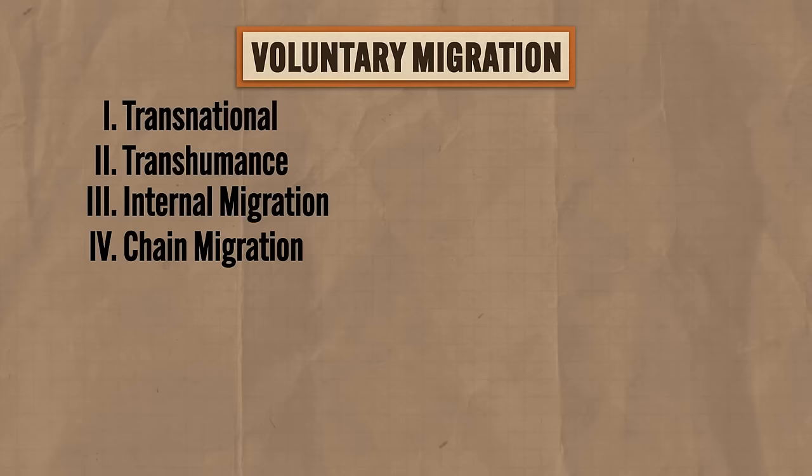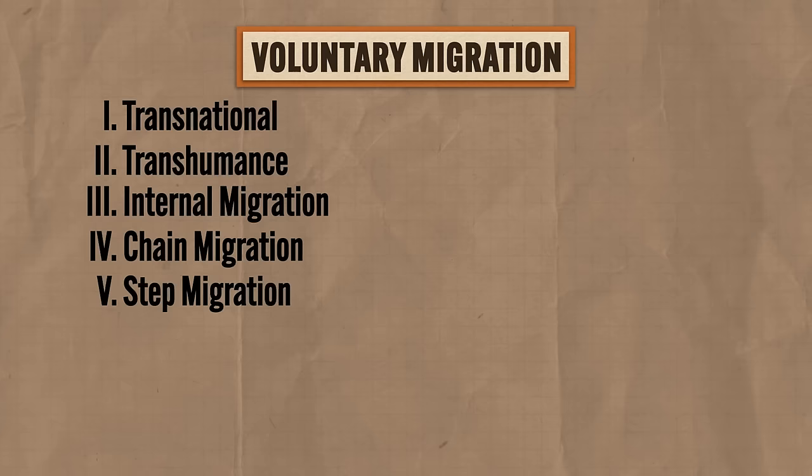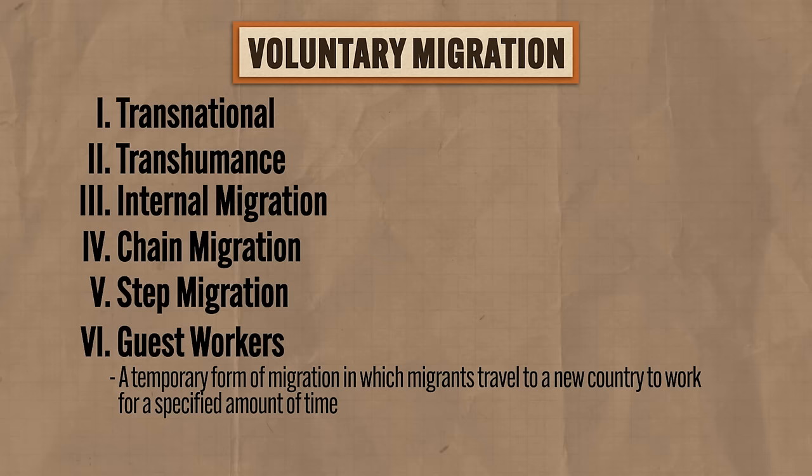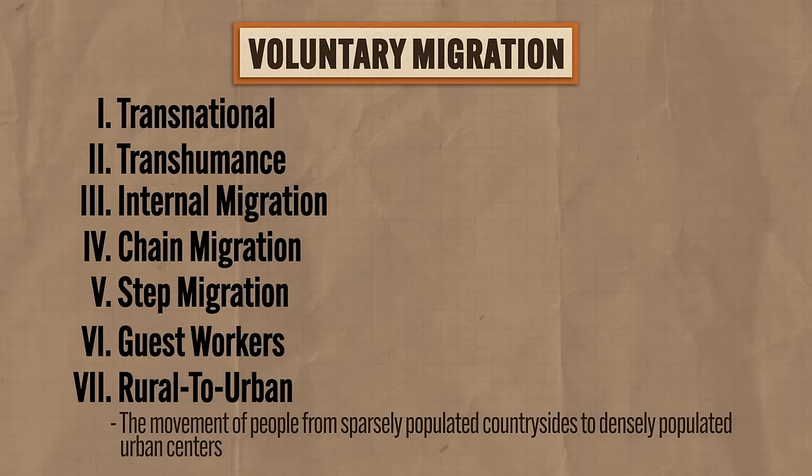Fifth is step migration — a migrant's journey often occurs in stages, not all at once. Migrants may encounter intervening obstacles or opportunities along the way and settle in villages or cities until they can make the next step to their ultimate destination. Sixth is guest workers — a temporary form of migration in which migrants travel to a new country to work for a specified amount of time; the Bracero program is a good example. Seventh is rural to urban migration — the movement of people from sparsely populated countryside to densely populated urban centers, which has been increasing ever since the Industrial Revolution.